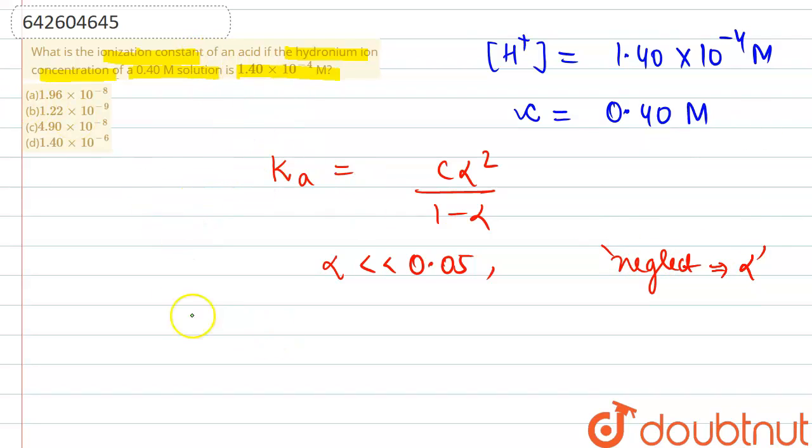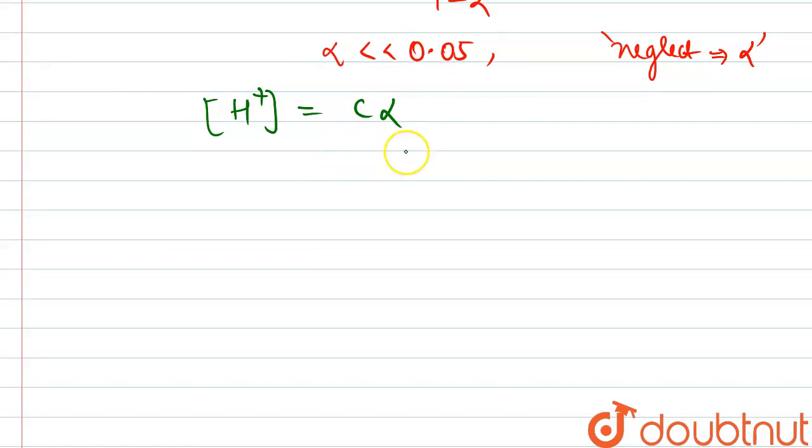What will be the value of Ka here? Ka is the ionization constant. Before that, we've got to find out the value of α, so we will use the expression: H+ ion concentration equals C into α, where C is concentration and α is the degree of dissociation.